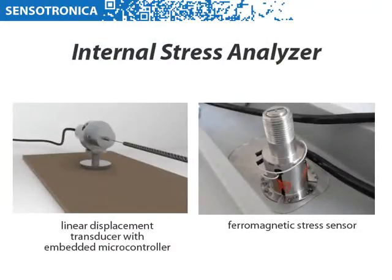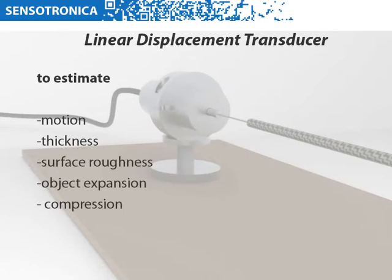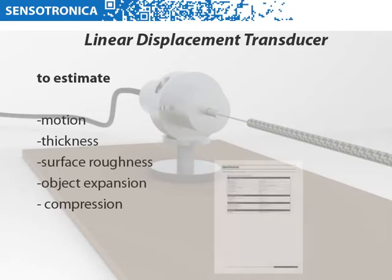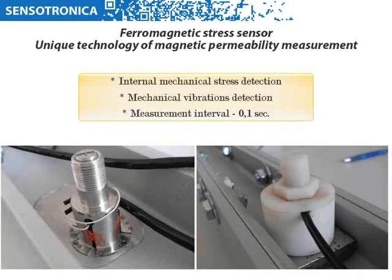The system comprises two components: a linear displacement transducer and a ferromagnetic stress sensor. The linear displacement transducer serves as the means of estimating motion, thickness, surface roughness, and object expansion and compression. The ferromagnetic stress sensor, the major component, introduces a unique technology of magnetic permeability measurement. It enables internal mechanical stress detection and mechanical vibrations detection, with a measurement interval of 0.1 seconds.